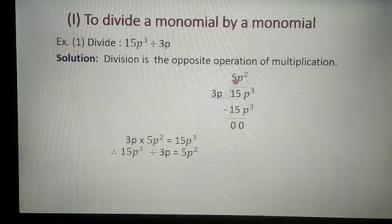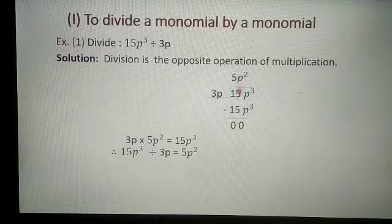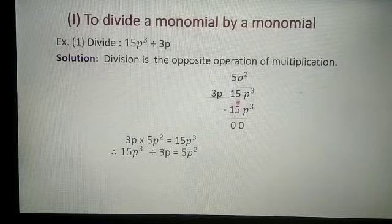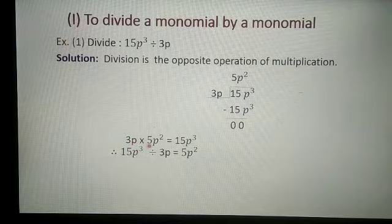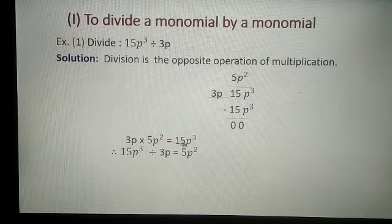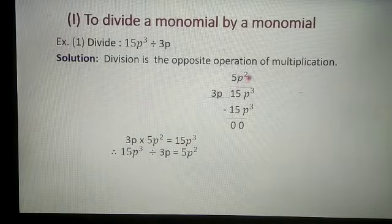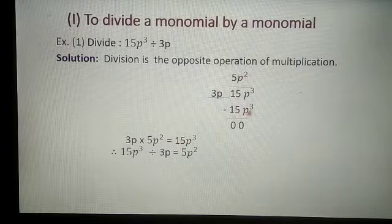3p is multiplied by which number to get 15p cube? In the explanation part: 3p is multiplied by 5p square to get 15p cube. So in the quotient part we will write 5p square, and here 15p cube.